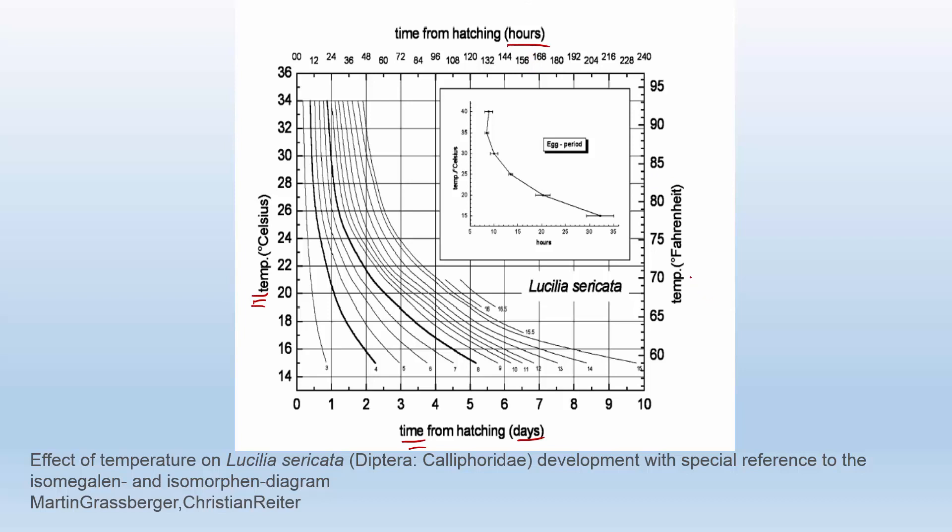And they're really nice and put the temperature in Fahrenheit on this side as well. Taking a look at this, we have a bunch of lines here. You can see at the bottom of each line there's a number. That number corresponds to how many millimeters the maggot is, how long is that maggot based on the size.